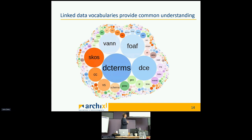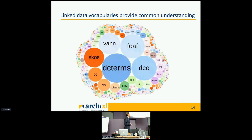There are really a lot of vocabularies. What you see here is an overview of vocabularies used on the semantic web — the size of the balls shows how much each is used. Dublin Core terms is probably the most used; others are FOAF — Friend of a Friend — for expressing attributes of persons, then SKOS. Schema.org is a very important initiative; it's not used that much yet but it's growing.